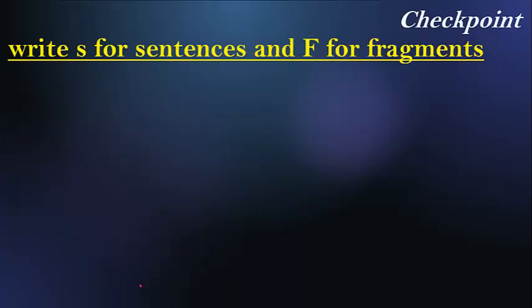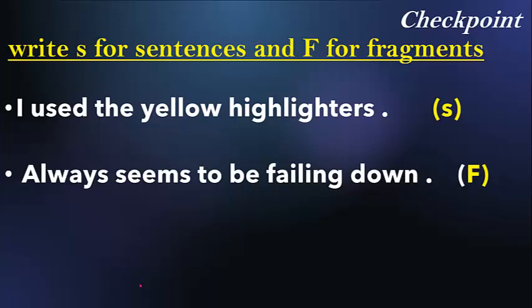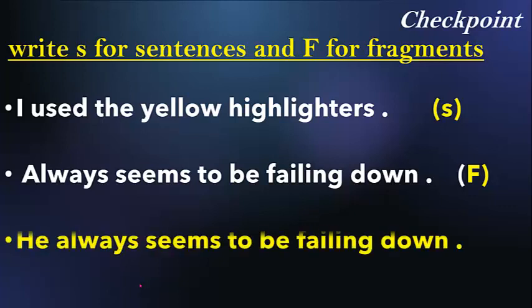Let's have a simple checkpoint. Write S for sentences and F for fragments. 'I used the yellow highlighters' — this is a sentence, you have a full meaning. 'Always seems to be falling down' — this is a fragment, F, because this sentence doesn't give a full meaning. It should be 'He always seems to be falling down.'